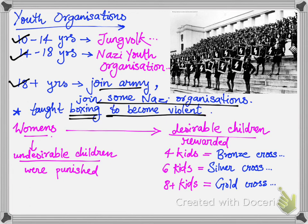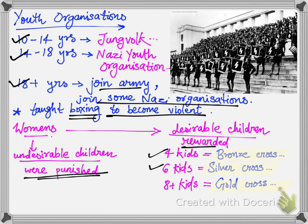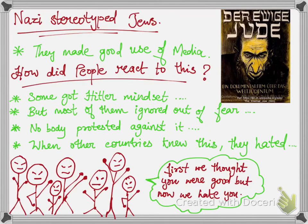Hitler believed that women were a very important part of his society. Women who gave birth to undesirable children were severely punished, but those who gave birth to desirable children were given rewards. A woman with four kids was gifted a bronze cross, with six kids a silver cross, and with eight or more kids a gold cross. Hitler also made good use of media to spread stereotypes about Jews through films, posters, and speeches. The most famous film against Jews was 'The Eternal Jew.'